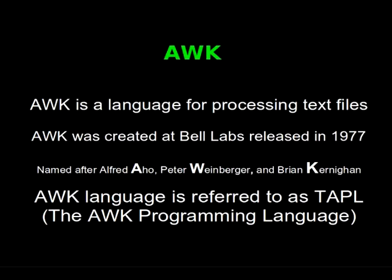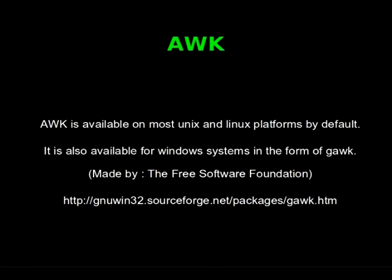What is AWK? AWK is a language for processing text files. AWK was created at Bell Labs and it was first released in 1977. It's named after Alfred Aho, Peter Weinberger and Brian Kernighan. The AWK language is sometimes referred to as TAPL, which stands for the AWK programming language. AWK is available on most Linux and Unix systems by default. There's also a version for Windows available called GAWK, which is made by the Free Software Foundation and available at SourceForge — there is a link on the slide.